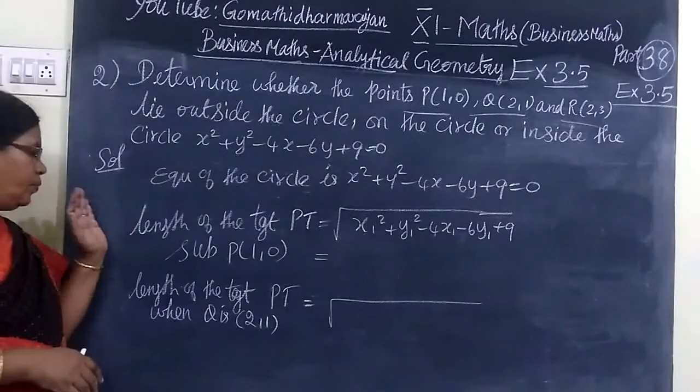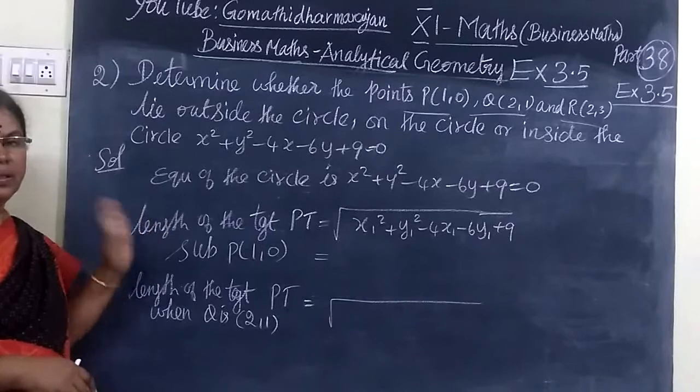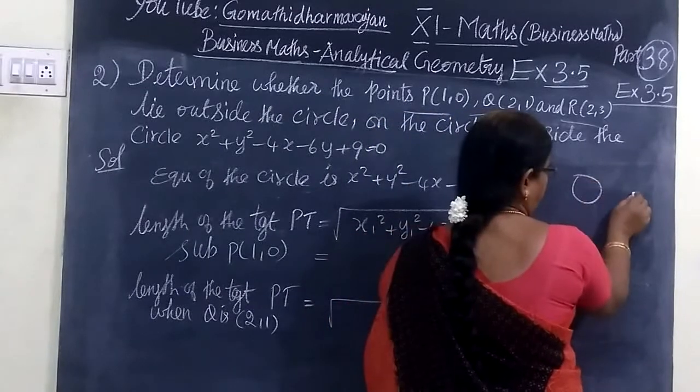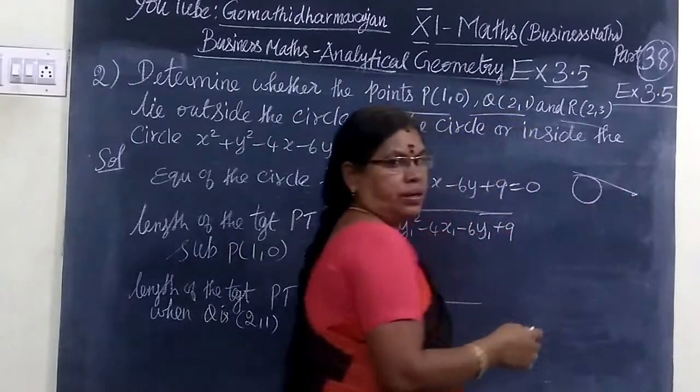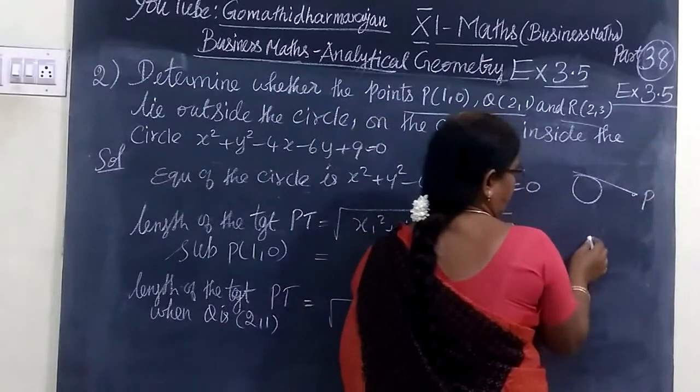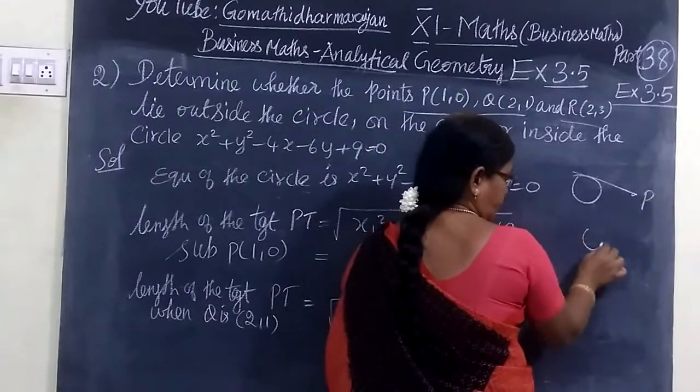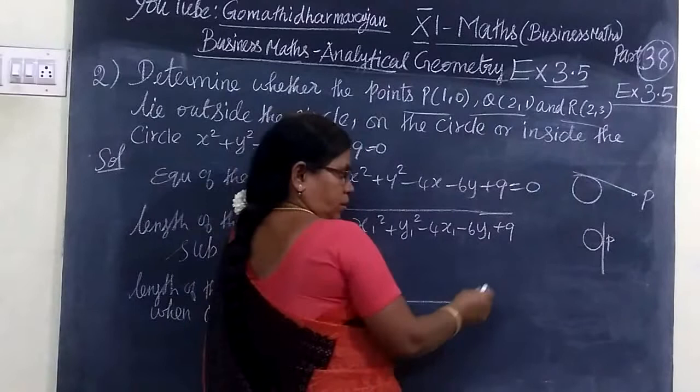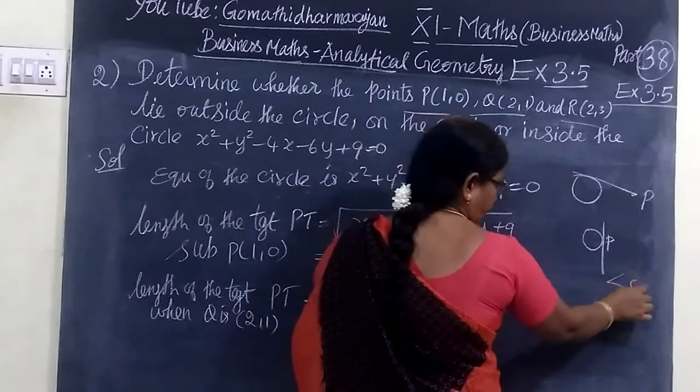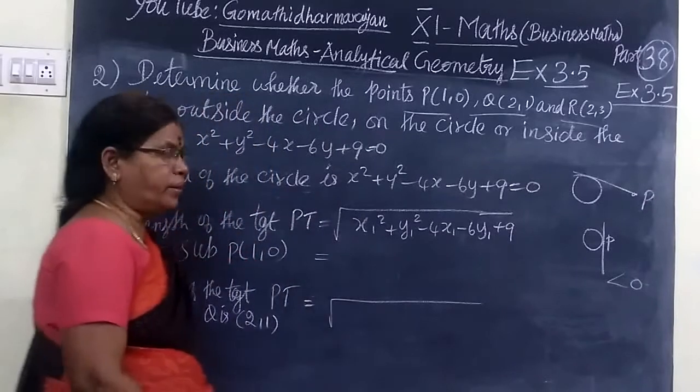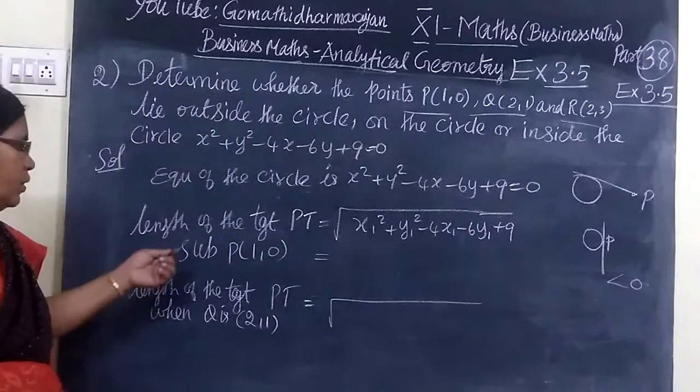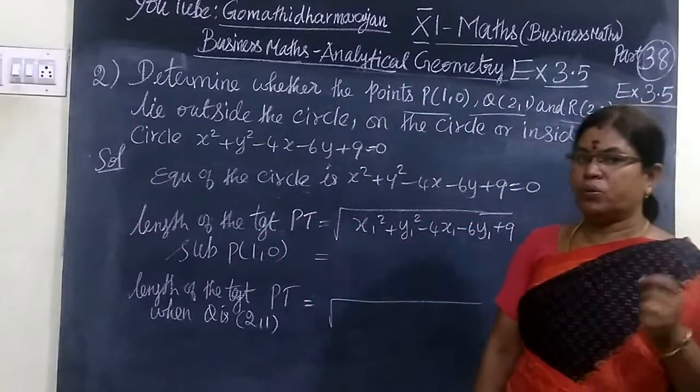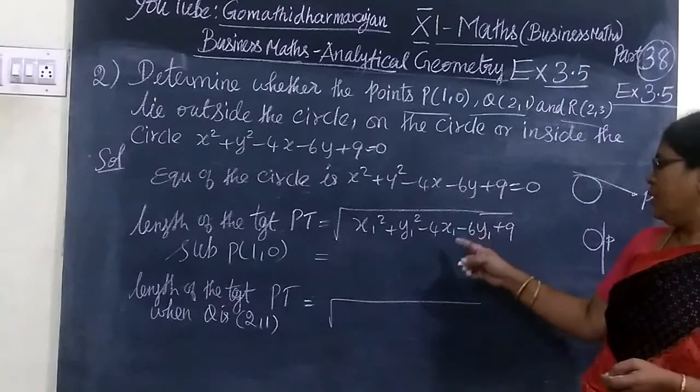For that, we are using the formula of length of the tangent. If length of the tangent is greater than 0, the point lies outside the circle. If equal to 0, the point lies on the circle. If less than 0, the point lies inside the circle. Here is the length of the tangent formula: root of x1 square plus y1 square plus 2G x1 plus 2F y1 plus C equals 0.